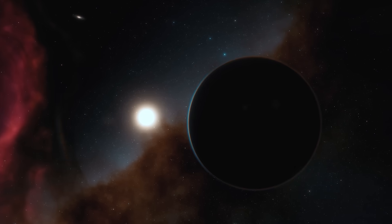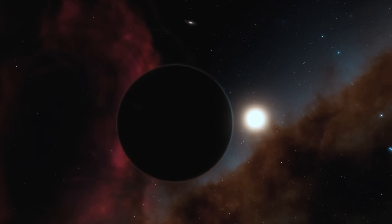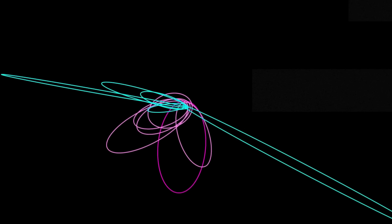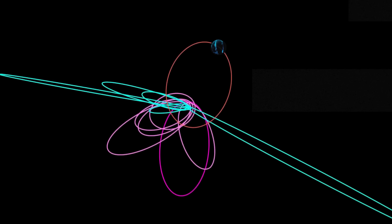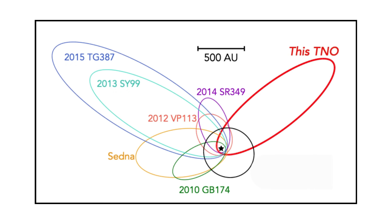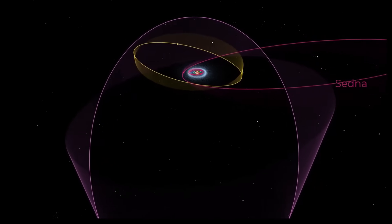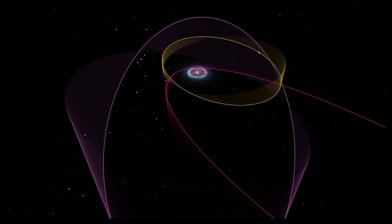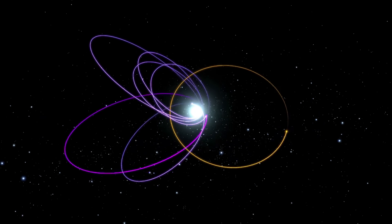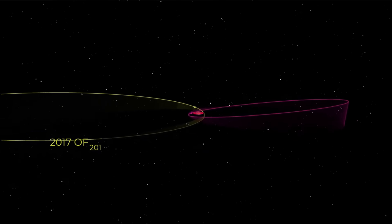One idea was that a giant planet, five to ten times the mass of Earth, was out there disturbing their paths. That's where the whole Planet Nine theory comes from. But here's the twist. 2017 OF 201 doesn't follow that pattern. Its orbit is totally out of alignment with the others. And that is a problem.